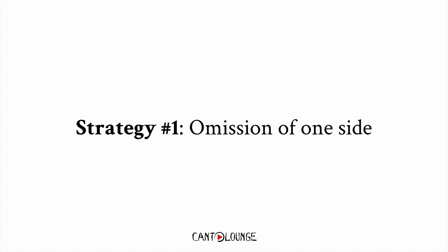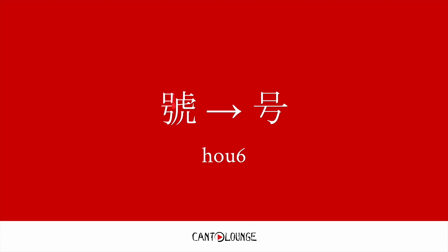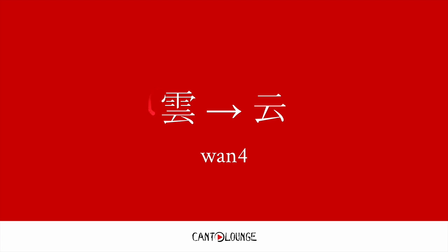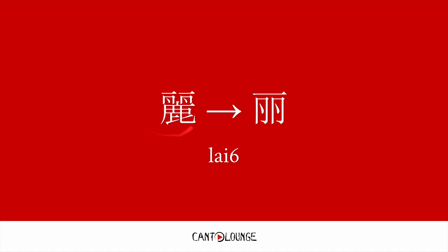Strategy number one is the omission of one side of a character. For example, we have an omission of this side of the character 六, meaning to record, and we have an omission of the right side of the character 号, meaning a number. Then we have an omission of the top side of the character 温, which means clouds, and an omission of the bottom side of this character 来, which means beautiful.